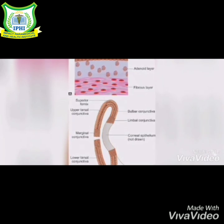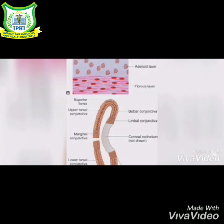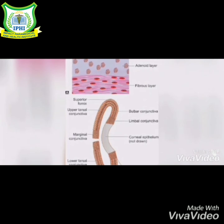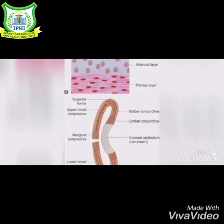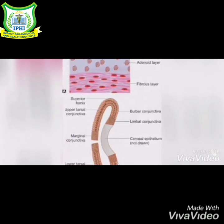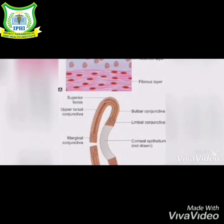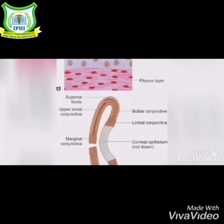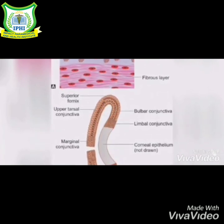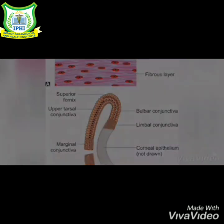The last layer is the fibrous layer, which consists of a meshwork of collagenous and elastic fibers. It is thicker than the adenoid layer, except in the region of the tarsal conjunctiva. I hope you all better understood this topic — thank you.